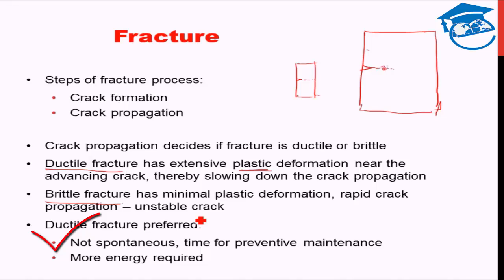Whereas in brittle fracture, being spontaneous and immediate, it can be catastrophic. Therefore, ductile is the preferred mode of fracture — it is an evil, but the preferred evil. Secondly, ductile fracture requires much more energy than brittle fracture, so it can last much longer under harsher conditions than a brittle material undergoing brittle fracture. That's why ductile fracture is the preferred mode for engineers.